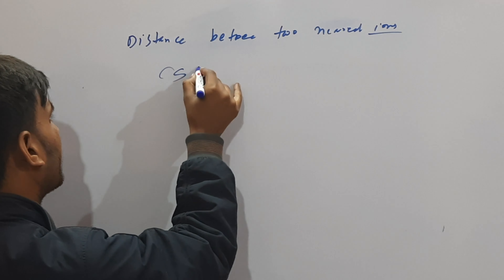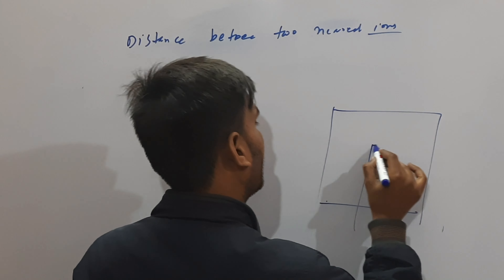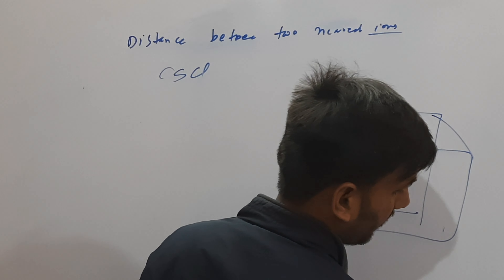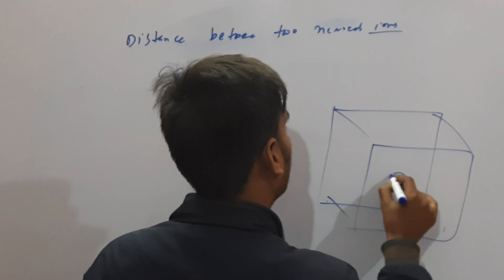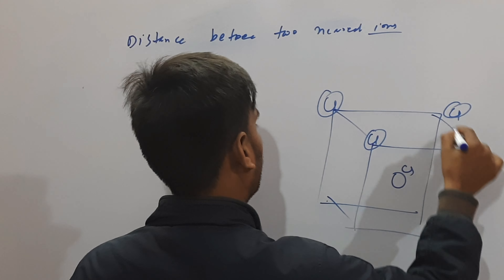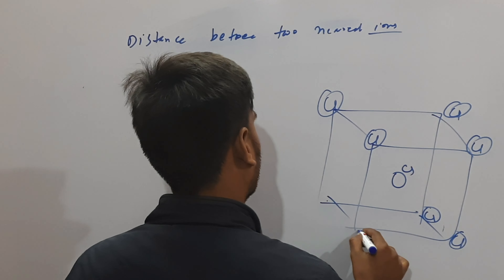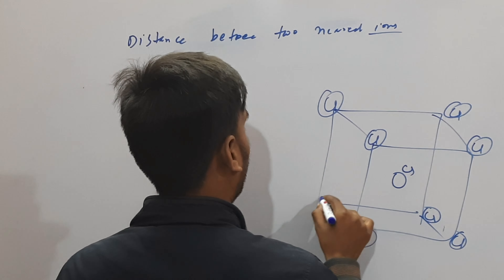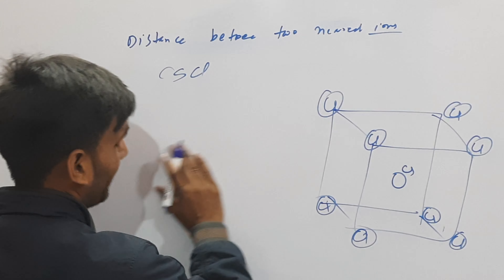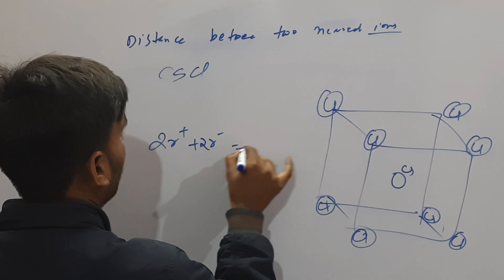CsCl type में इसका lattice का diagram किस तरह होगा। यहाँ पर CS है और यहाँ पर CL corners पर है। यह CsCl type का structure है।